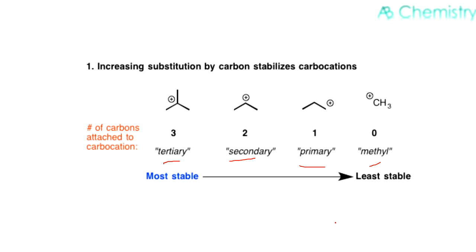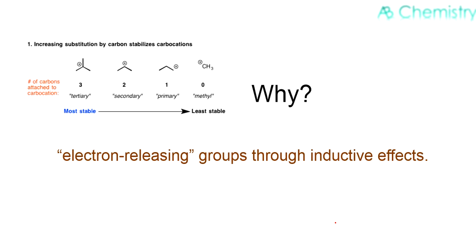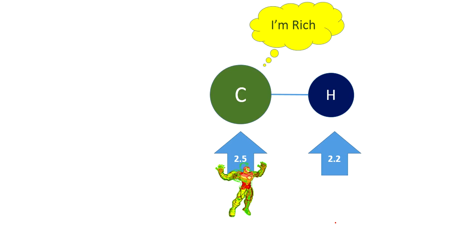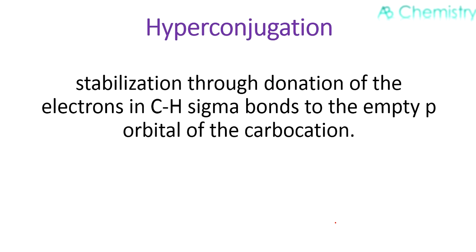The first reason is because of the electron-releasing groups through inductive effects. These methyl groups - the carbon is electron-releasing through induction. We can see in detail: this carbon is attached to a hydrogen. Carbon has an electronegativity of 2.5, whereas hydrogen has an electronegativity of 2.2. The carbon thinks that it is electron-rich, and if there is a nearby carbocation, it will donate its electrons, thus stabilizing it.